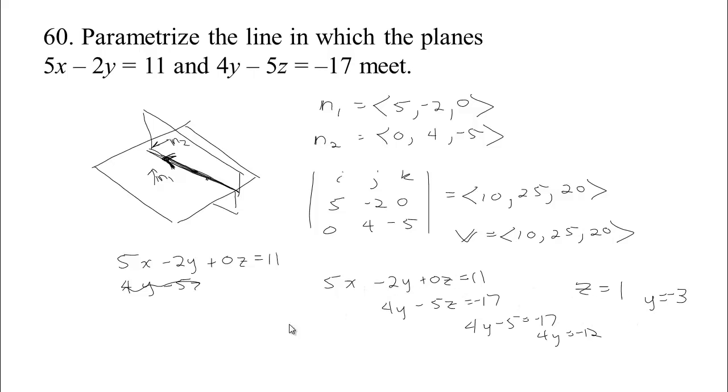And now that I know that y is negative 3, I can go up here to this equation for x. 5x minus 2y, but if y is negative 3, then we're going to have 5x plus 6 equals 11. So 5x will equal 5, so x will equal 1. So now we have a point on the line that will be R0. We've figured out that the point 1, negative 3, 1 satisfies both equations. You could check it up here, but we just found that point in order to do it.